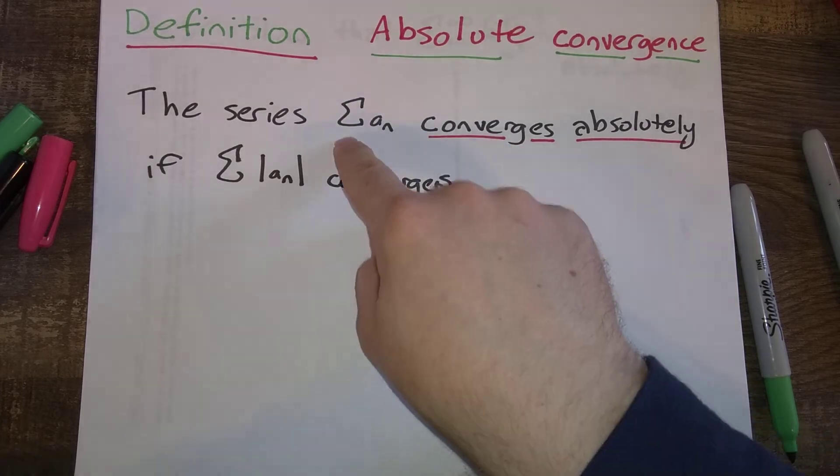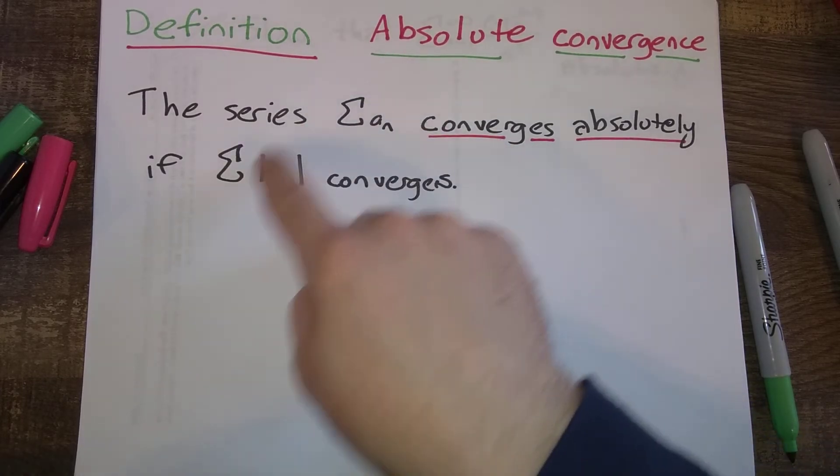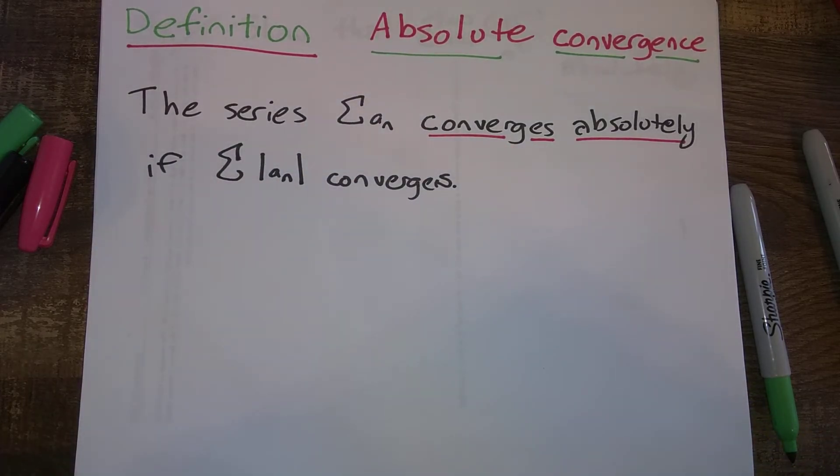By the way, I'm not bothering to put on n from one to infinity or anything like that here, because it's kind of implied that there needs to be something there, the sum from something, n from something to infinity. But it doesn't matter if this is n from zero to infinity, n from one to infinity, n from two to infinity. This is just what it means for this series to absolutely converge.